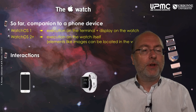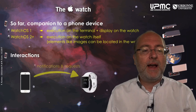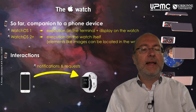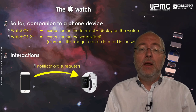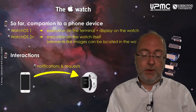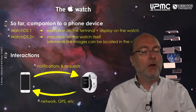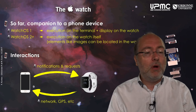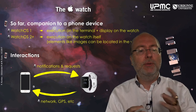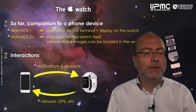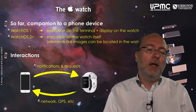What are the interactions between the phone and the watch? The phone may send notifications and requests to the watch to be displayed. And of course the watch may request network information, data, or GPS location. Basically, this is the idea.